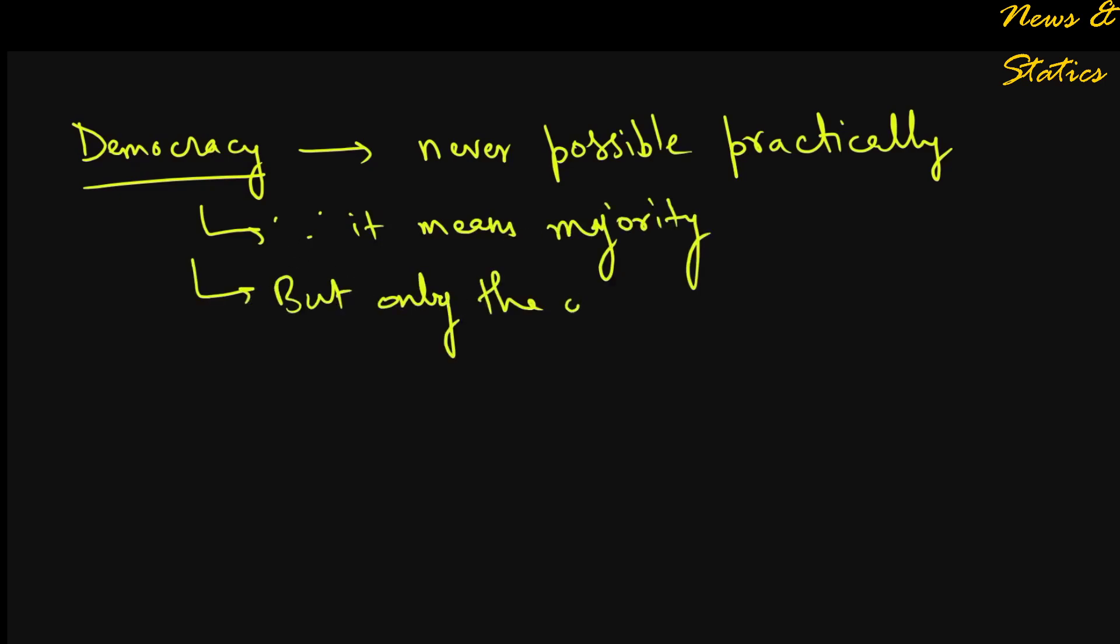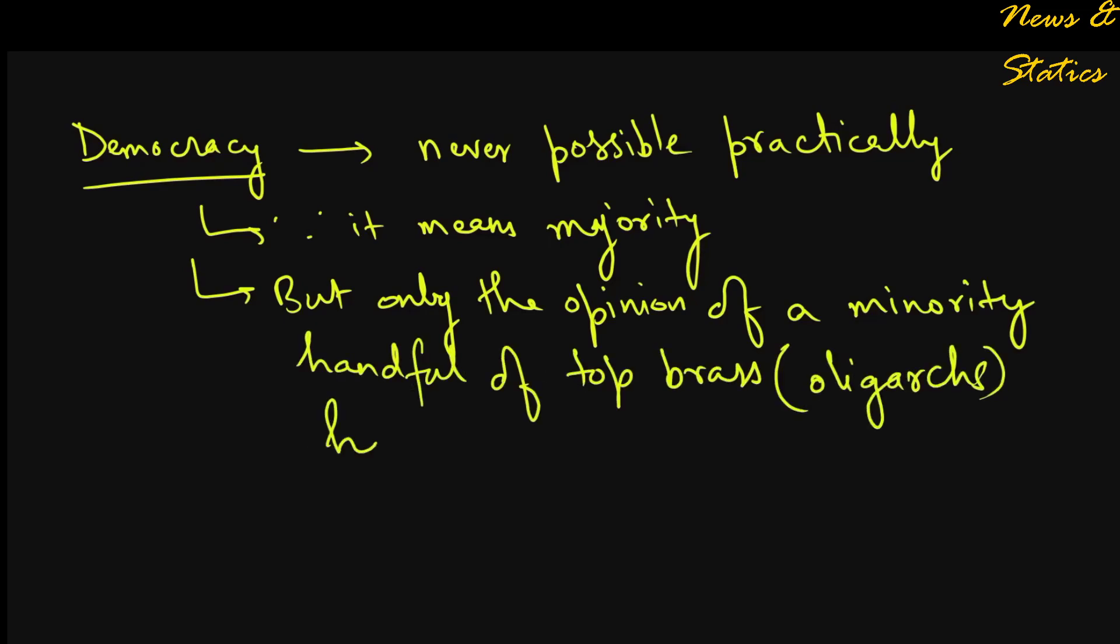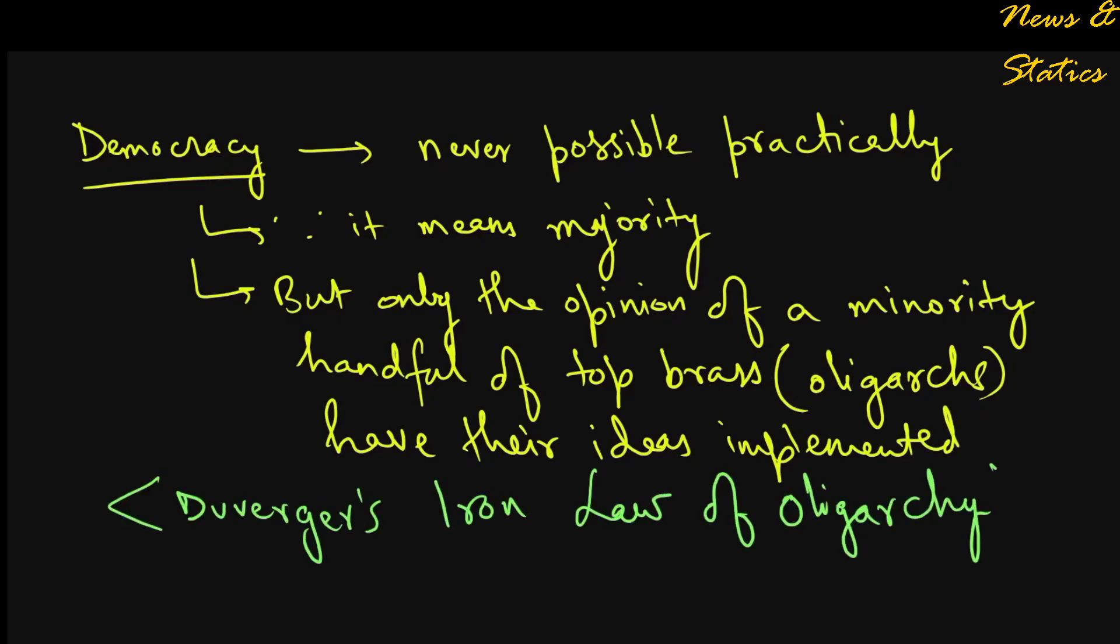In fact, democracy can never be realized in any organization. It is never the majority opinion which prevails, but the opinion of a minority of handful of oligarchs which occupy the top positions in the organization. This is Duverger's iron law of oligarchy, which again shows that in practice how difficult it is for power to be distributed evenly. You see, not just in any society but in any organization.